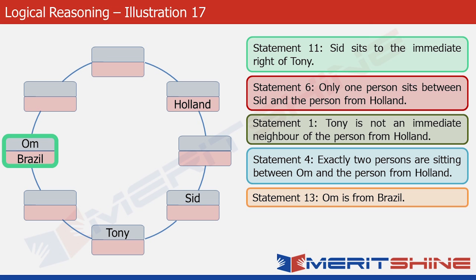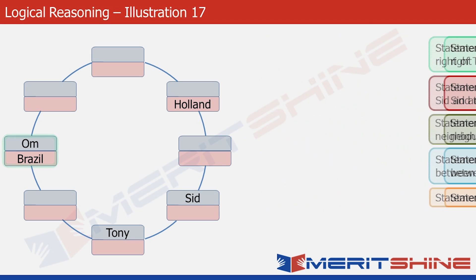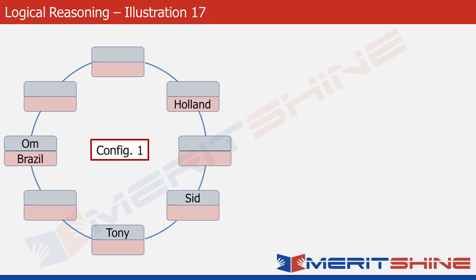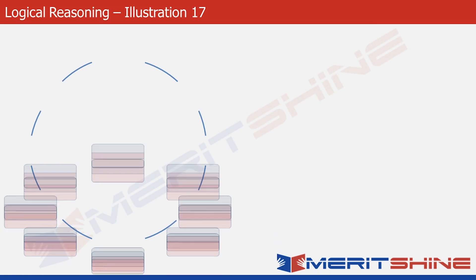Let's call this structure Configuration 1. We will leave it for a while and move to a separate parallel configuration. This is the technique we employ when there are two sets of data that are not well connected — we make two partial arrangements and try to merge them later, as you will see in this problem. Let's go to Configuration 2 and fill that up.